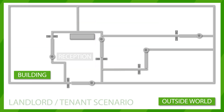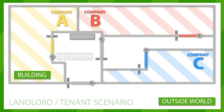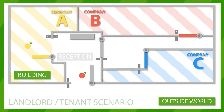Here, we see a multi-tenanted building. It is occupied by three companies – Company A, Company B and Company C. In addition to doors belonging to each of the companies, there are some common doors. We see people from each of the three companies using common doors and doors belonging to their respective companies.